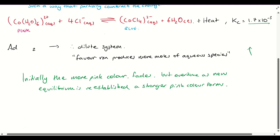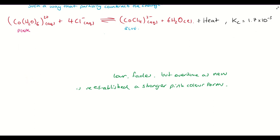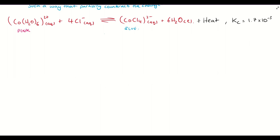Let's take a look at what happens if we change the overall temperature of the system. What's really important when talking about temperature is whether heat is formed or used up in the reaction. Here we can see that heat is being produced. So let's say we increase the temperature. If we think of heat as a product, we're increasing the amount of heat. In terms of endothermic and exothermic processes: if heat is a product, we have an exothermic process, because heat is flowing from the system into the surroundings. So this particular forward reaction is an exothermic process.